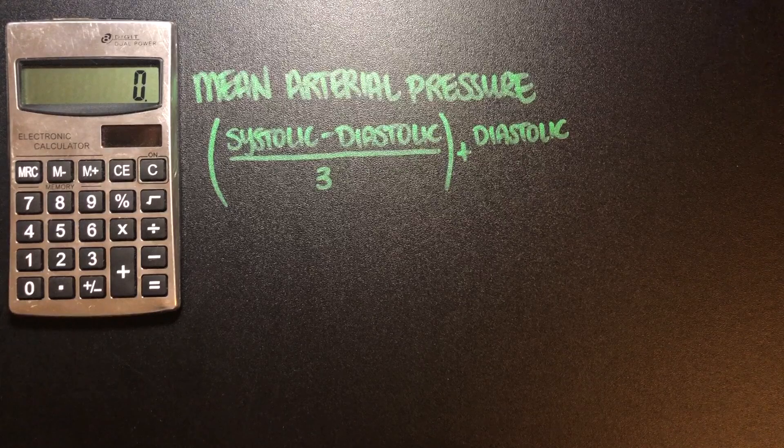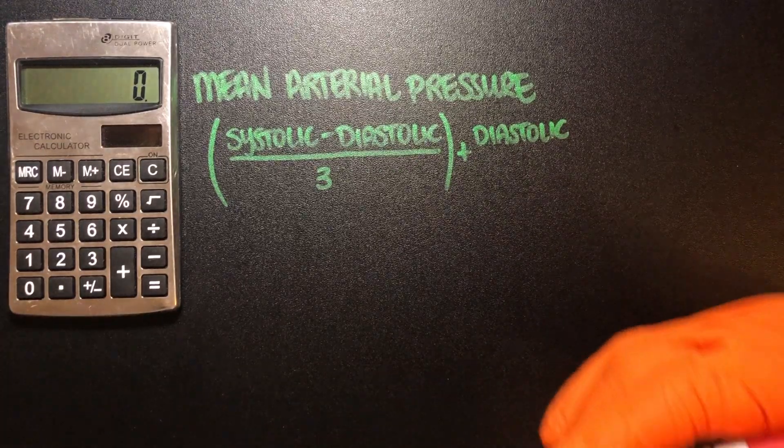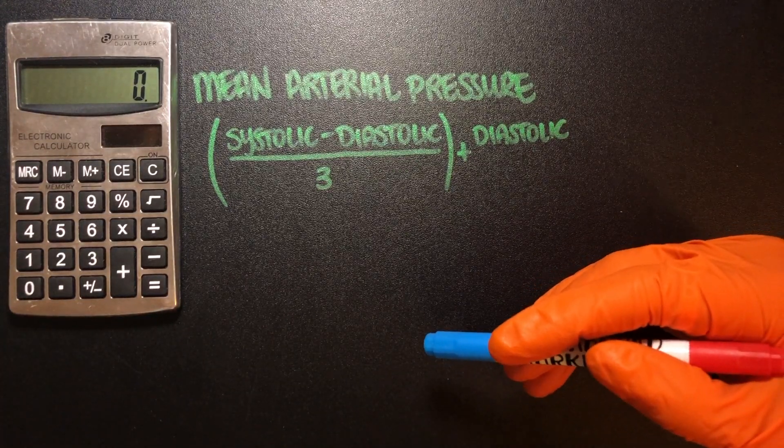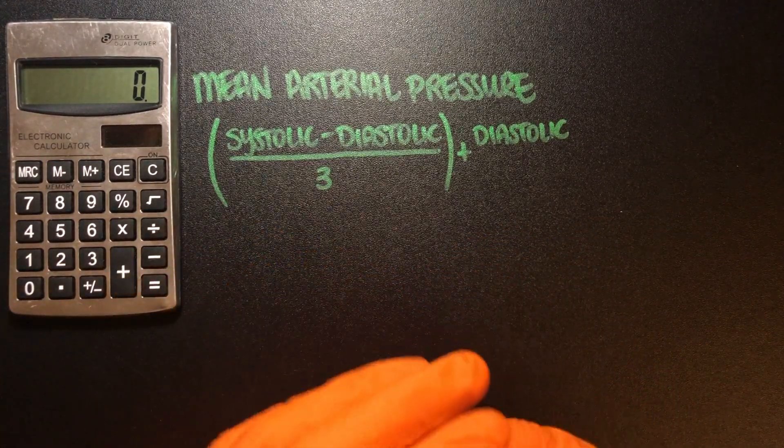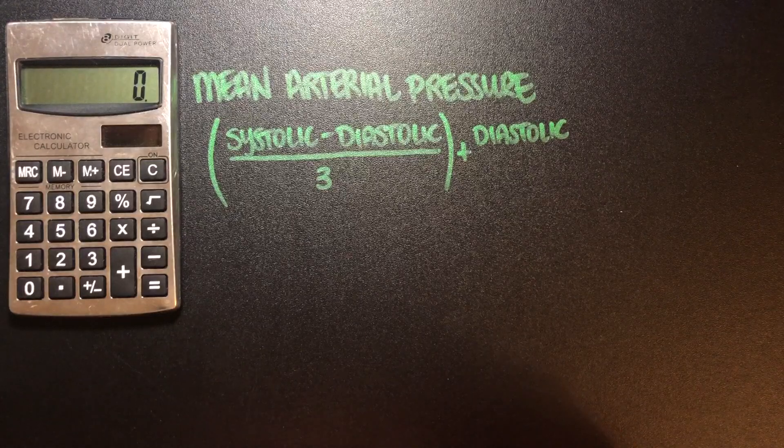And really what this number tells us is how well the tissues and organs are being perfused, essentially how well the arteries are delivering that oxygenated blood.